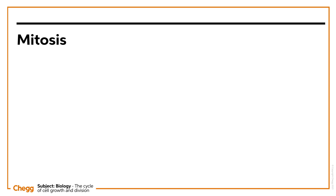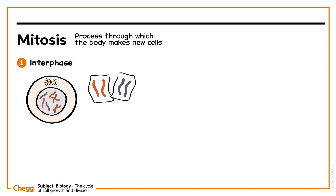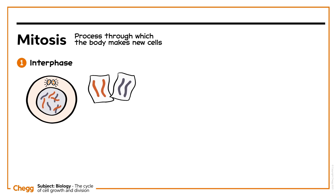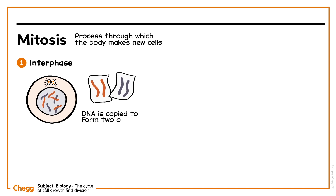Part of the cell cycle, mitosis is the process through which the body makes new cells. The first step of the cell cycle is interphase. Cells spend most of their life in interphase. Cellular DNA is copied to form two of each chromosome, ready for mitosis to begin.